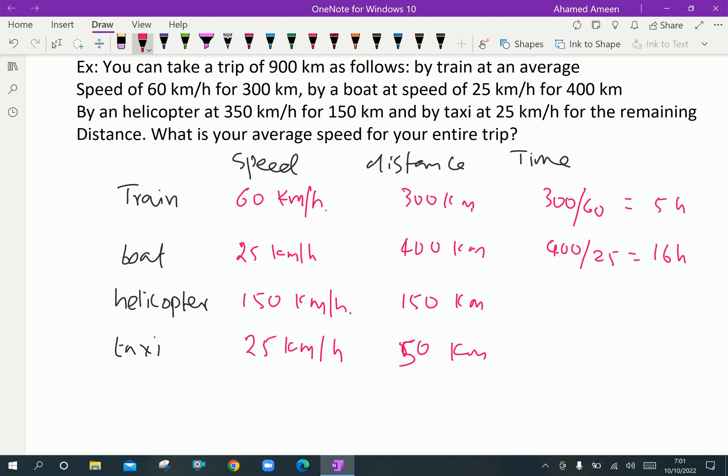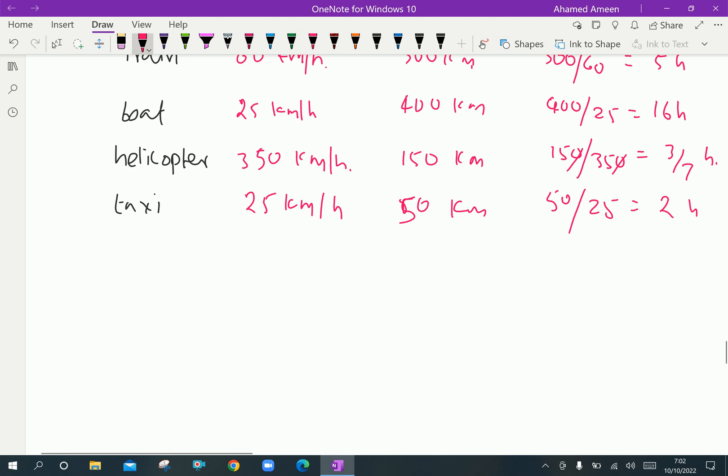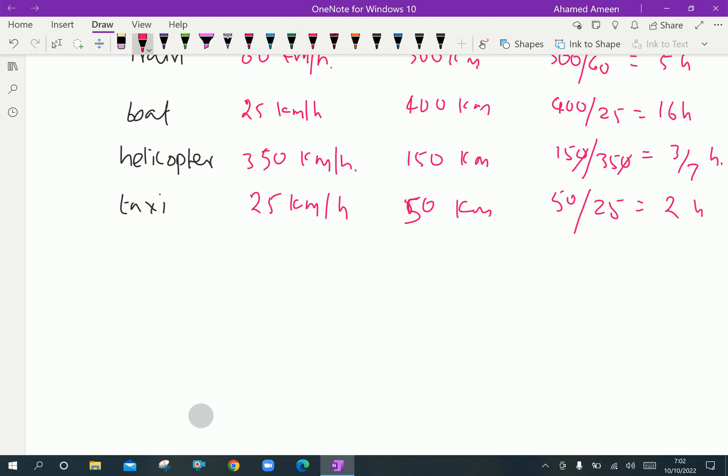Then, 150 by helicopter, 350. Here, speed is 350. That is this is basically 150 divided by 350 which is equal 3 by 7 hours. And distance by speed is 50 divided by 25 which is equal to 2 hours.